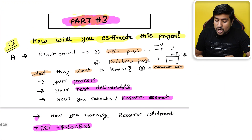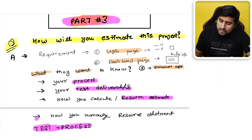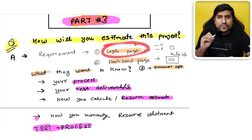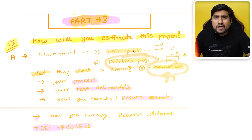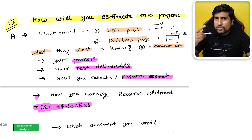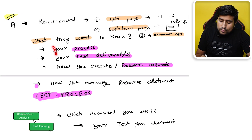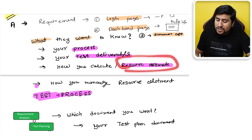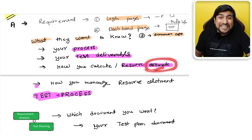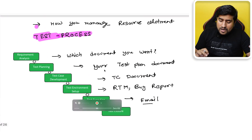The first question is: how will you estimate a project? Suppose they give you a project with a login page, a dashboard page, and an e-commerce website. What they want to know is your process — what exactly you follow, what your test deliverables are as a manual tester, and how you allocate resources and estimate man-hours.